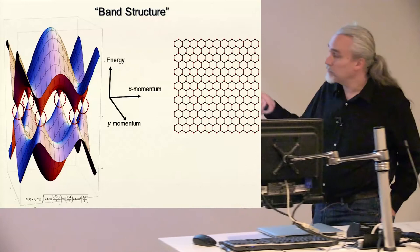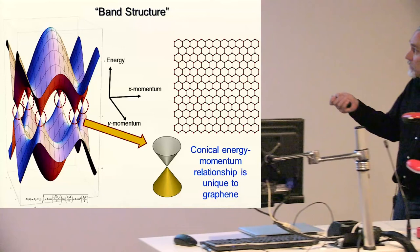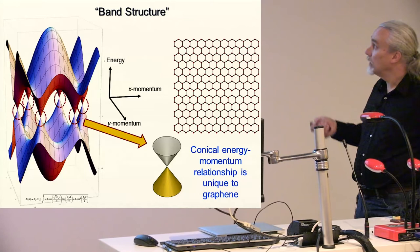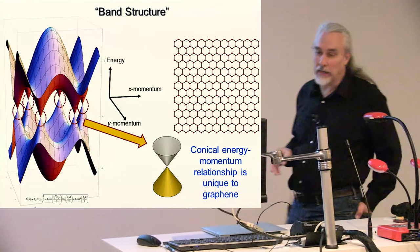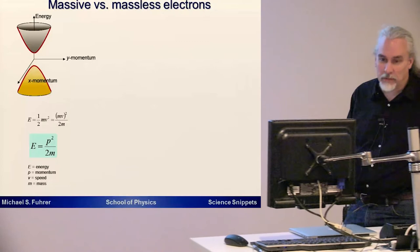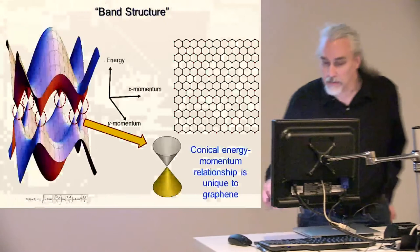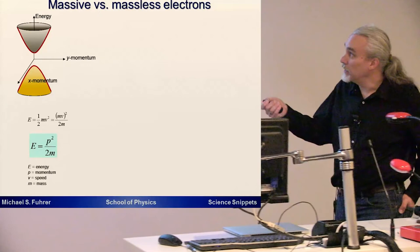These points here where graphene conducts actually turn out to be quite special. Other materials don't have points that look quite like this. They have this funny conical structure—we have this cone here touching an upside-down cone here. This conical relationship between energy and momentum is unique to graphene. Graphene has this, but other materials don't, and that's something that's really qualitatively different.